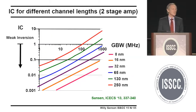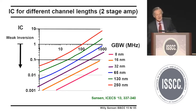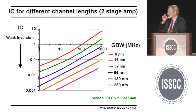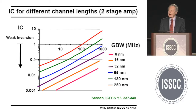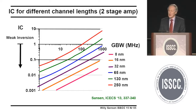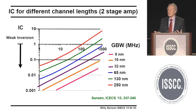For a two-stage amplifier — some people like two-stage, some three-stage, even four or five — for 8 or 16 nanometer at speeds around one gigahertz as used in sigma-delta modulators, all values are at one-tenth of the boundary between strong and weak inversion. So all analog electronics will end up in the weak inversion region, and we had better learn about that.